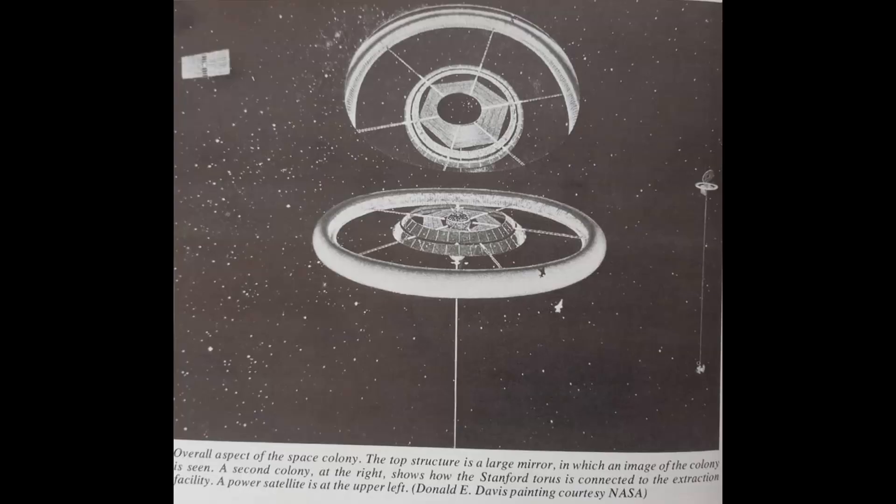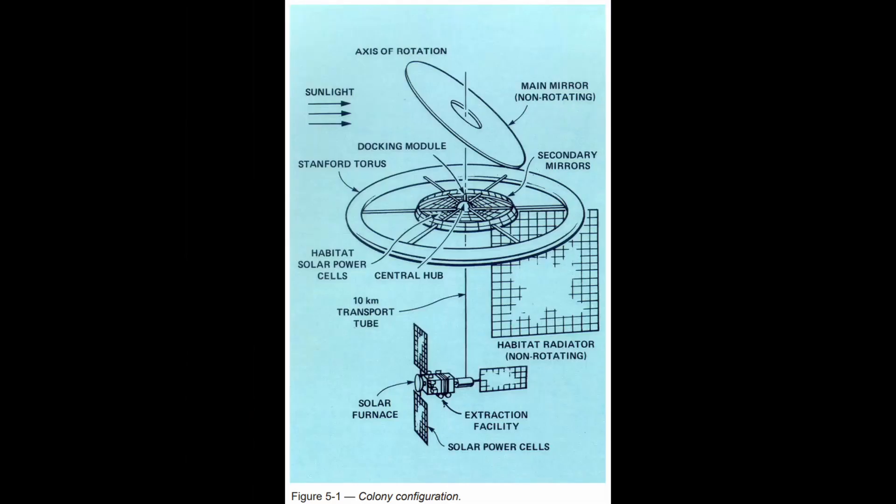And here is a Stanford torus. The weird-looking thing on the top is actually just a large disc-shaped mirror at an angle and so that reflects sunlight from the Sun down onto the sort of cone-shaped mirror in the center which then bounces that to the ceiling you see on the ring.